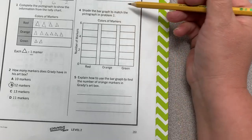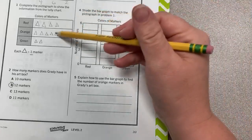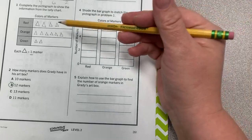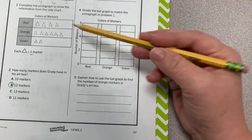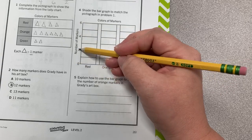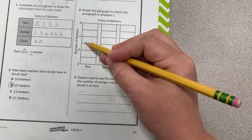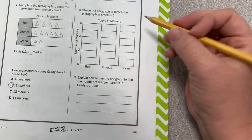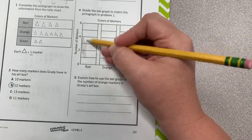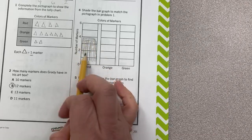Shade the bar graph to match the pictograph in problem one. Okay, so we have our pictograph and now we're going to create a bar graph using this information. So for red, we have four. If you look at our intervals, we are counting by twos. They do have the ones marked off also, though. So we need four. So we're going to go up to four on red. I'm not going to make this perfect. Okay, I'm just not.